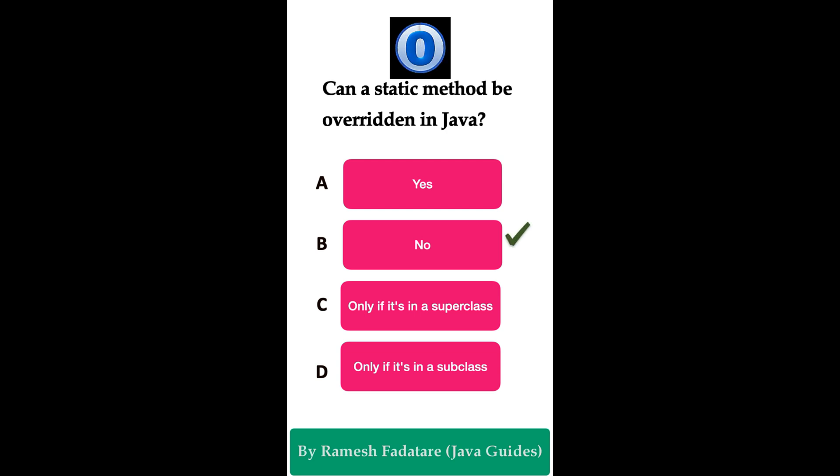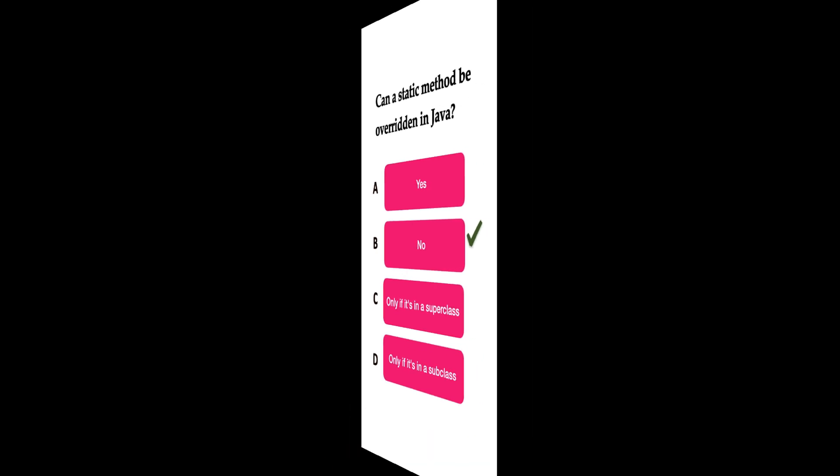The correct answer is option B: no. In Java, static methods belong to a class, not to instances, and cannot be overridden in a subclass. Since static methods belong to the class itself rather than any particular instance, they cannot be dynamically changed or overridden in subclasses. Instead, static methods can be hidden in a subclass using the same method name, but this is not true overriding.